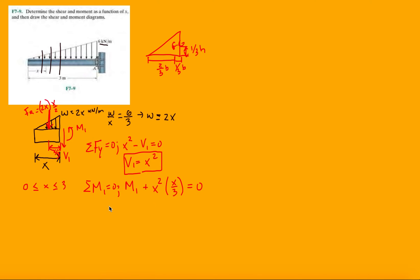So with X over 3 as our distance, the moment equation gives us M1 minus X squared times X over 3 equals 0, which is M1 minus X cubed over 3 equals 0. I caught a sign error — it's negative X squared, so the corrected shear equation is negative X squared minus V1 equals 0, making V1 equal to negative X squared. Now these derivatives match up correctly.